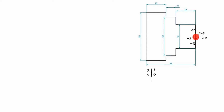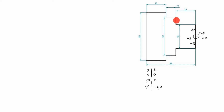Up to this point we go this way. X is 50, Z value is 0. After that it goes this way — X value is 80, Z value is minus 40.